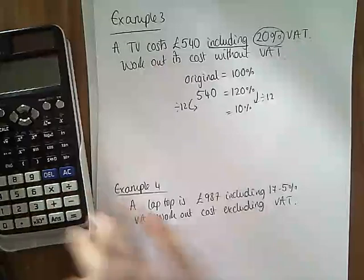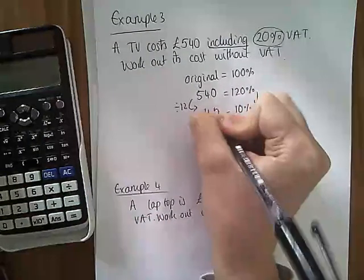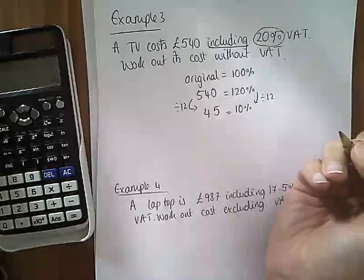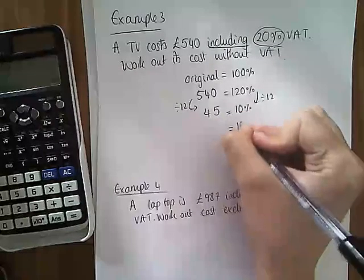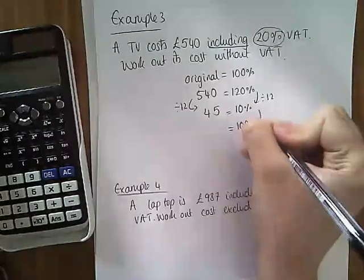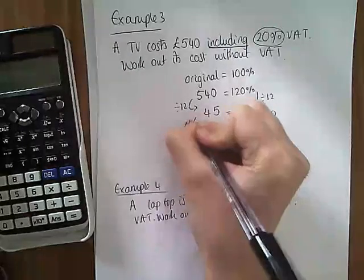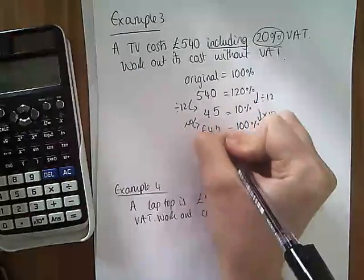540 divided by 12 is 45. You shouldn't need a calculator for that, although I used one. And then you could do a bus stop, of course. And then to get to 100%, I'm going to times by 10, times by 10. And it should be £450.